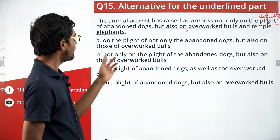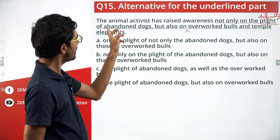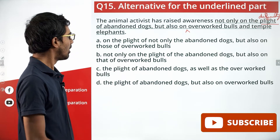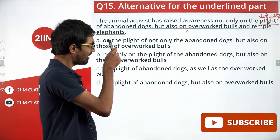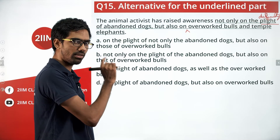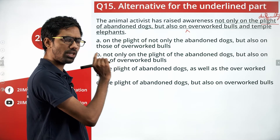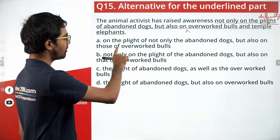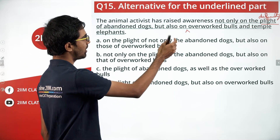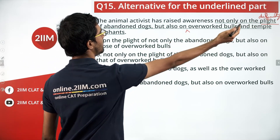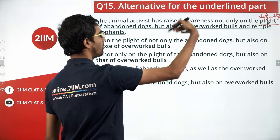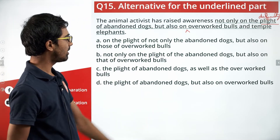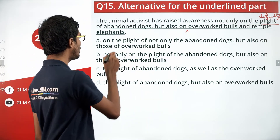'On the plight of not only the abandoned dogs but also on those of overworked bulls' — on first look this seems right and seems to fit in perfectly, but this is not right. Let's explore why. 'On the plight' comes before, and 'not only' gets pushed later — 'on the plight of not only the abandoned dogs but also on those...'